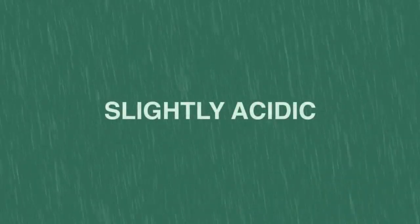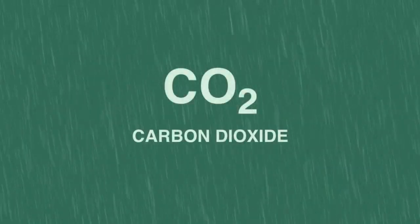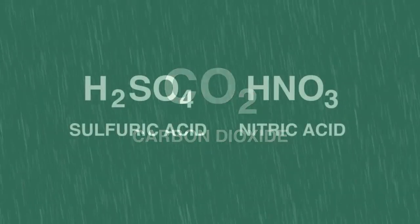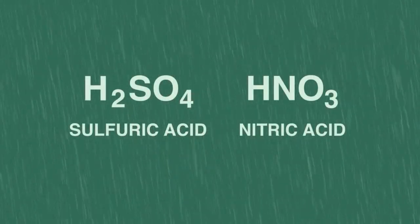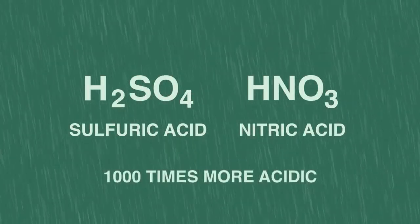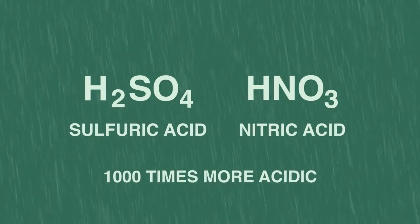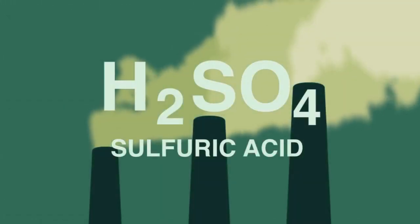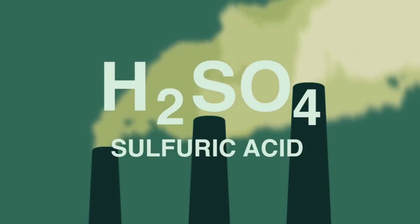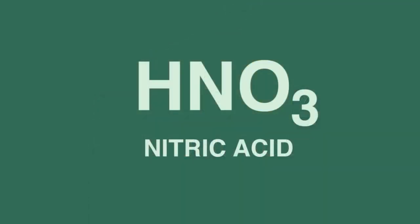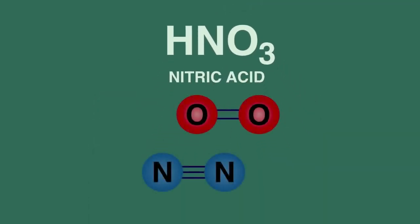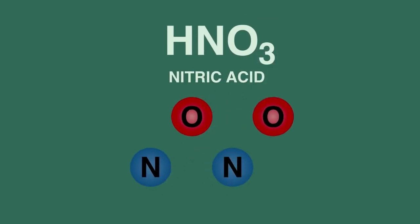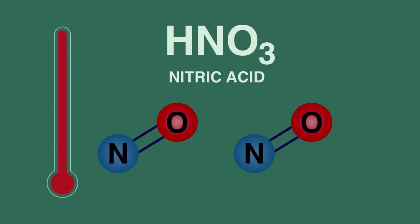So to summarize: normal rain is slightly acidic due to dissolved carbon dioxide, but acid rain contains sulfuric and nitric acid, making the rain a thousand times more acidic and dangerous for many living things. Sulfuric acid arises from the burning of fossil fuels containing sulfur. Nitric acid arises from the combustion of atmospheric oxygen and nitrogen in the high temperature conditions in the cylinders of petrol and diesel engines.